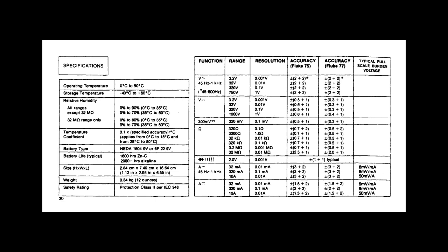So having four ranges, say 2, 20, 200, and 600 volt, is better than having two ranges because the accuracy is typically affected by the range.